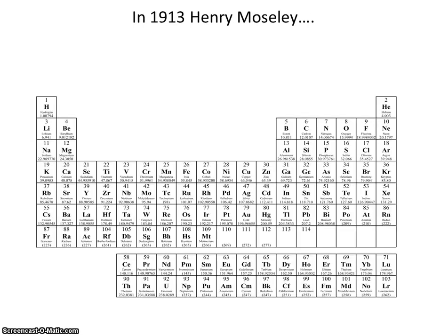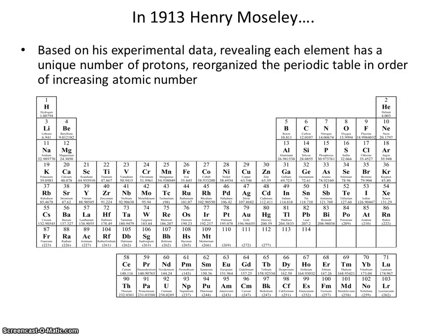Henry Moseley, based on experimental data revealing each element has a unique number of protons, reorganized the periodic table in order of increasing atomic number. And that's how our periodic table today is arranged — not in order of increasing atomic mass, but in order of increasing atomic number.